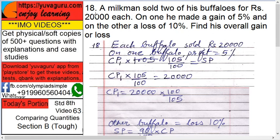A milkman sold two of his buffalos for Rs. 20,000 each, meaning one buffalo for 20,000. In one he made a profit of 5% and in the other he made a loss of 10%. Find the overall gain or loss. Here you don't know anything except the selling price of each buffalo, the profit percentage in one, and the loss percentage in the other.